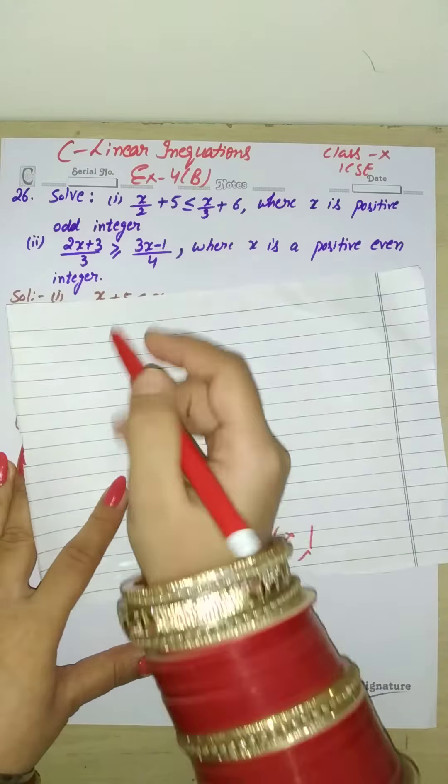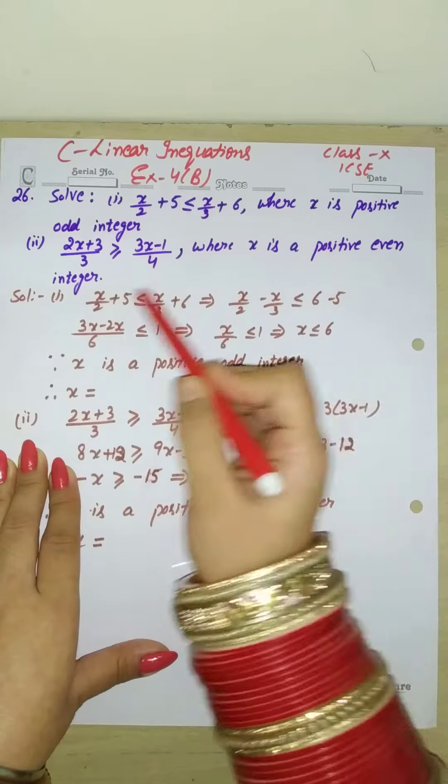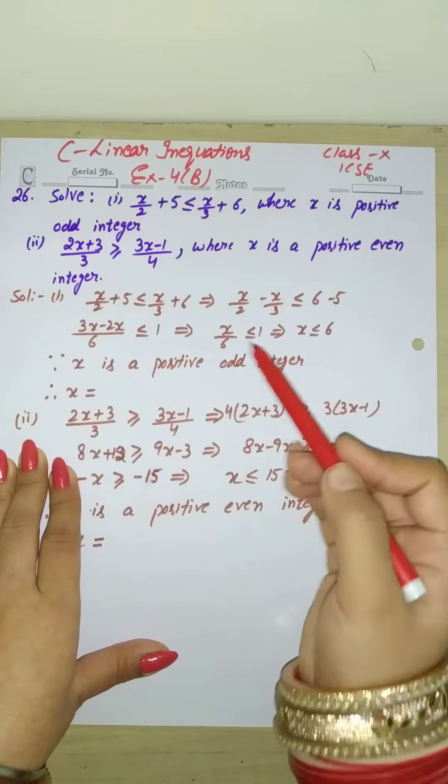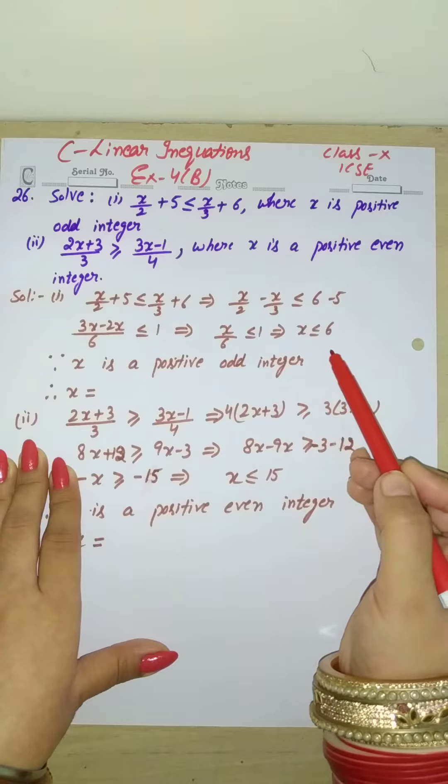Now, what do we need to do in this sum? First of all, we need to solve it and find x's value. Then we need to follow the answer according to this rule. So I have solved this because we solved this sum earlier. Here, x is less than or equal to 6.